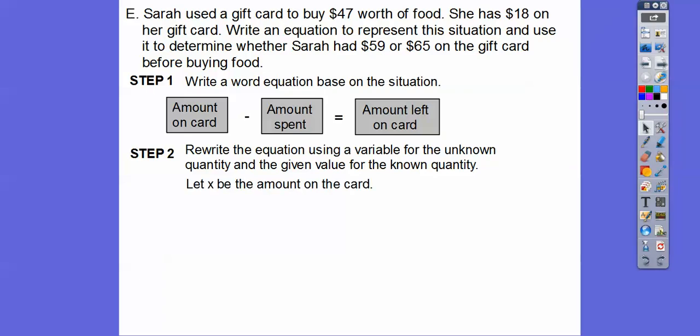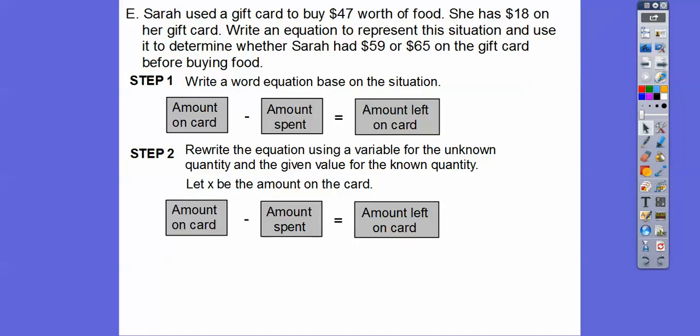So let's rewrite the equation using variables for the unknown quantity and give the value for the unknown quantity. So let's let X be the amount on the card because that's what we're looking for right there. So the same setup we have up there. So the amount on the card minus the $47 she spent is going to equal the $18 left.